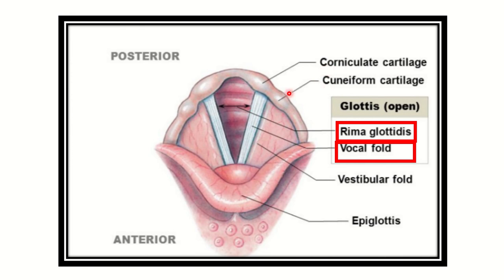We can also see the corniculate and cuneiform cartilages within the larynx — there are different types of cartilage. The anterior part of the larynx features the epiglottis, and the posterior part contains the different types of cartilage.